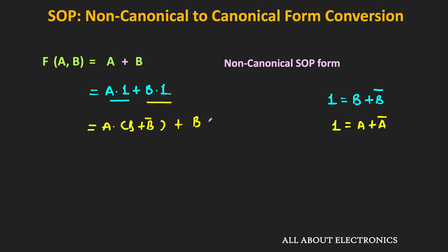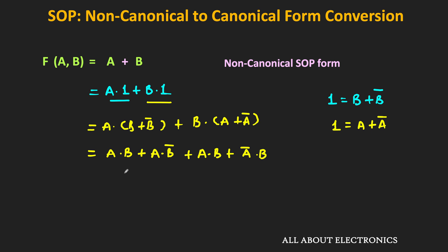If we further simplify, we get A·B + A·B̄ + A·B + Ā·B. The term A·B appears twice, so we write it only once. That means we can write the expression as A·B + A·B̄ + Ā·B. Now each product term contains all the variables of the function, so this expression is in the canonical form. In this way we can convert any non-canonical SOP expression into canonical form.